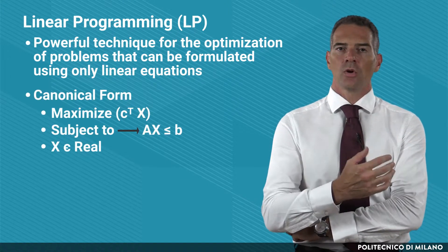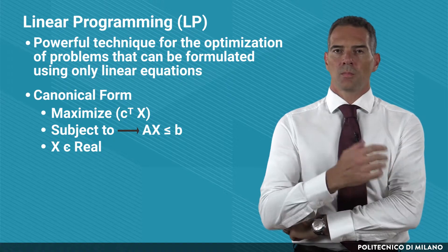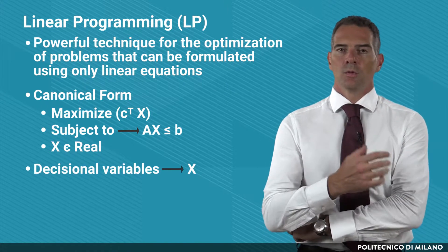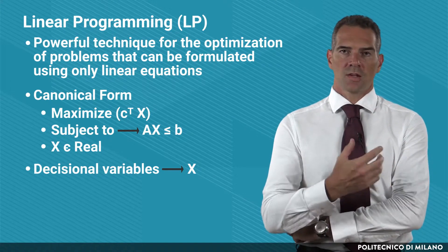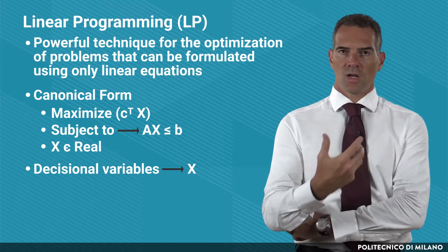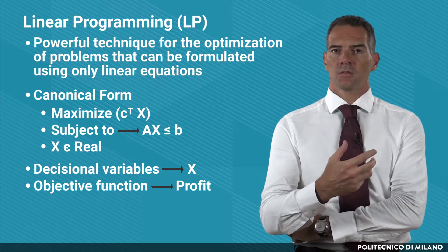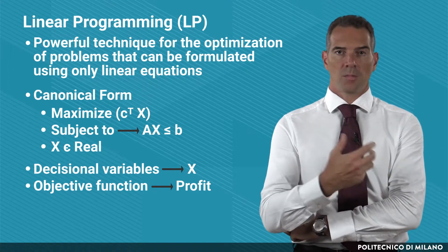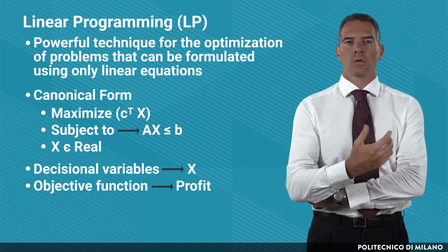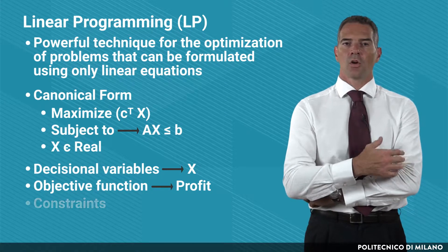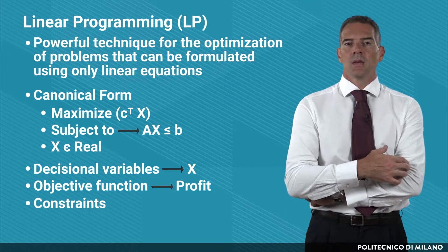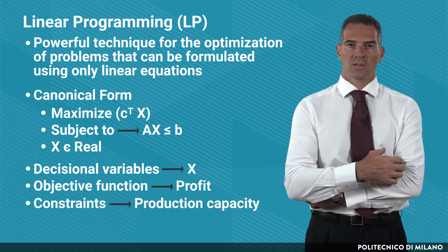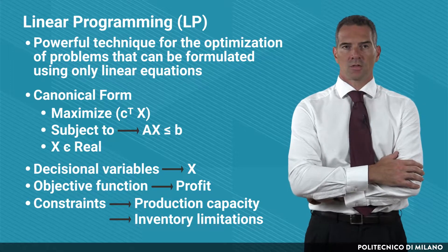In its canonical form, you have to optimize — maximize or minimize — the product of some decisional variable x multiplied by an array of coefficients which express their importance in terms of the objective function. This objective function can be a profit maximization or dually a cost minimization. Moreover, through linear equations you also have to express a set of constraints, so Ax ≤ b. This set of constraints can be used to express, for instance, production capacity limitations or inventory limitations and so on.